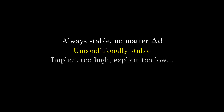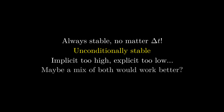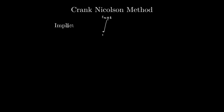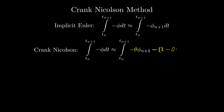Still, the accuracy wasn't the greatest — explicit Euler goes too low and implicit Euler goes too high. Maybe a mix of both would be more accurate. Let's try mixing implicit Euler with explicit Euler using a blending coefficient theta.